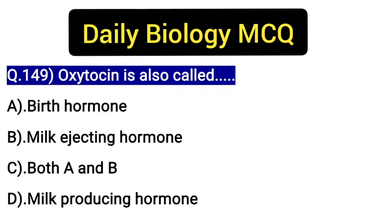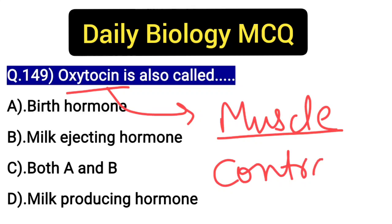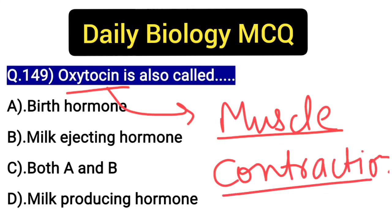So oxytocin is synthesized by the hypothalamus and released by the posterior pituitary. Now, what is its function? This acts on the muscles — specifically, it helps in muscle contraction, as also mentioned in NCERT.